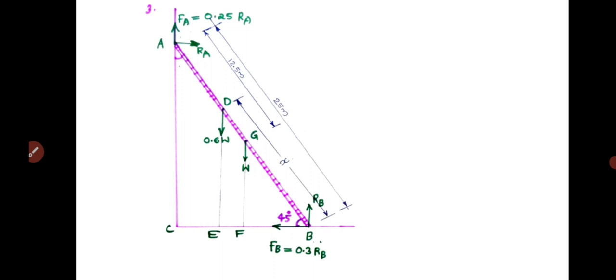The inclination of the ladder is 45 degrees. At end A the ladder will move down, so the frictional force is mobilized opposite to the movement, acting upwards. FA equals 0.25 times RA, acting upwards. RA is the normal reaction at A from the wall. Another person having weight 0.6W is acting at point D. Let us assume the distance DB equals X.